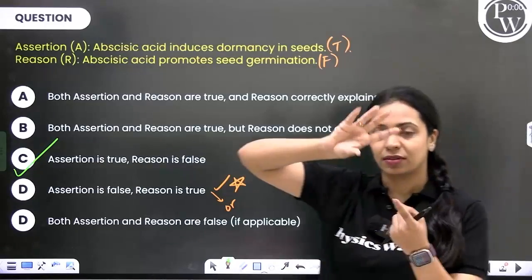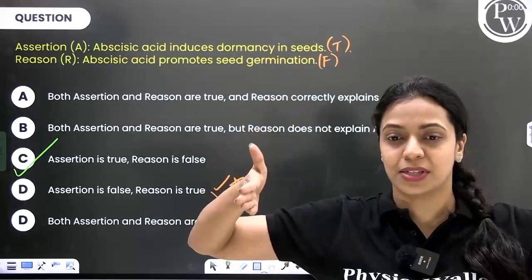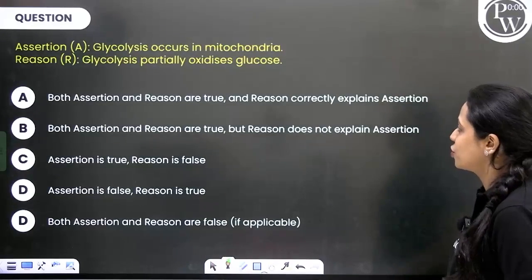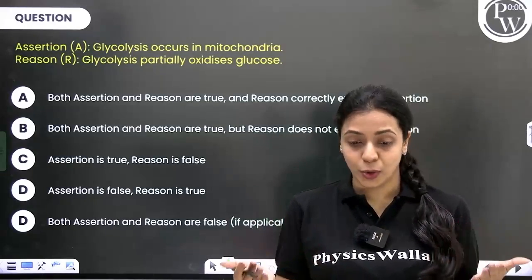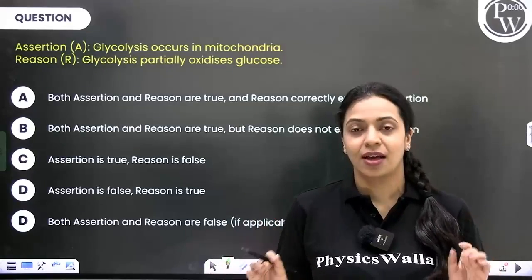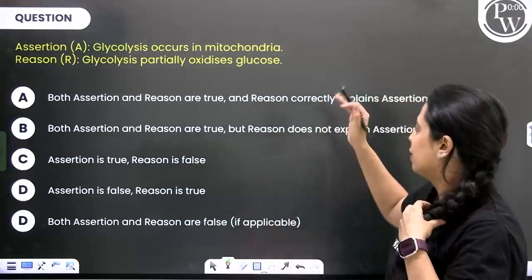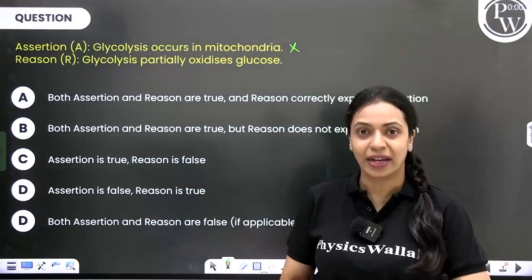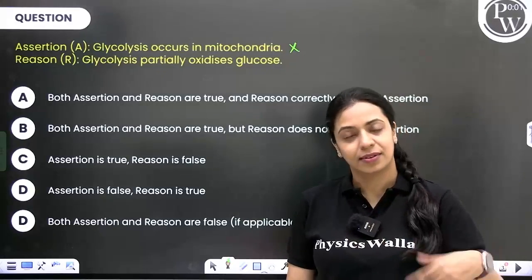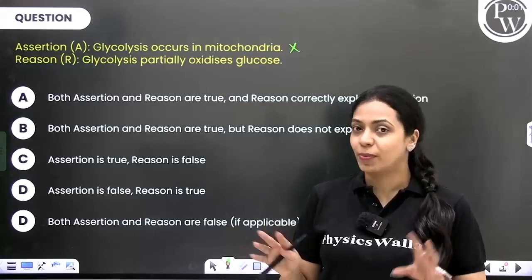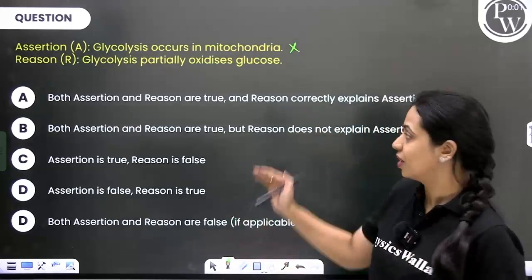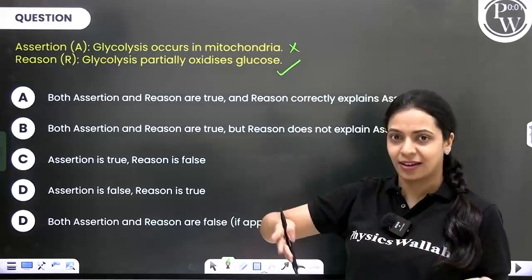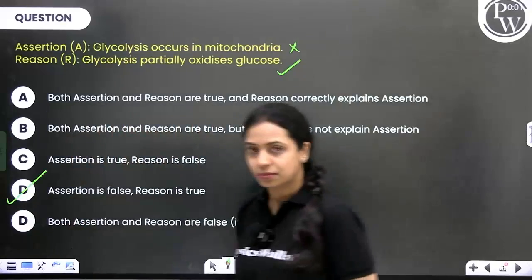The takeaway from that example: whenever given such a question, read both statements independently without forcing a link between them. Next question: Assertion — glycolysis occurs in the mitochondria. Reason — glycolysis partially oxidizes glucose. Both are about glycolysis, so it might seem like option A, but take each statement individually. Glycolysis does not occur in the mitochondria — it occurs in the cytoplasm, even in prokaryotic organisms. So assertion is false. Now your job is easy. Reason: glycolysis partially oxidizes glucose — yes, this is true. So our correct answer is assertion is false but reason is true.